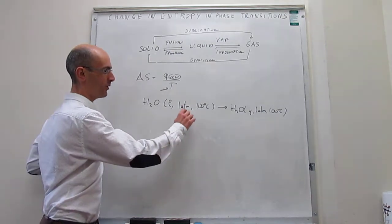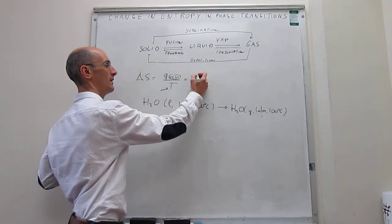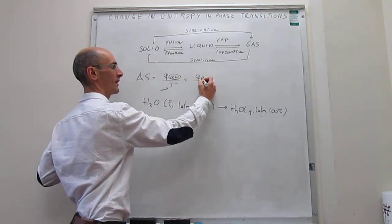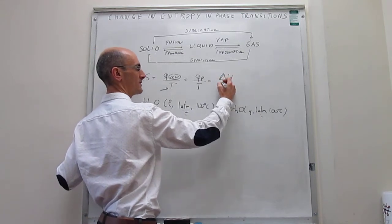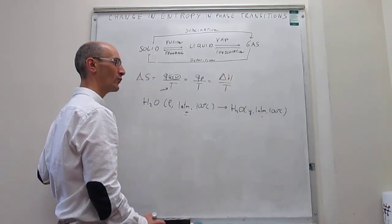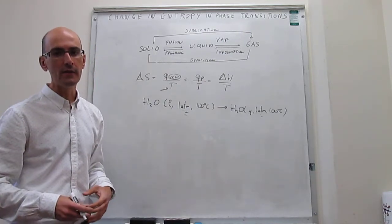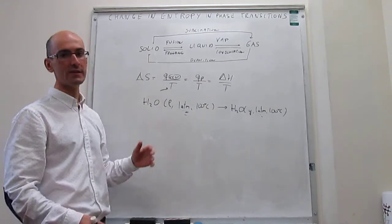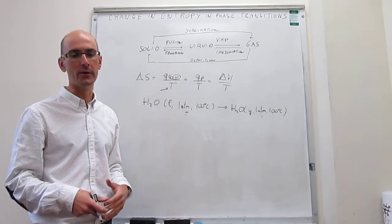Now, because we're operating at constant pressure, we know that this is going to be equal to Q sub P over T, but that is equal to delta H at constant pressure. So if we know the enthalpy of the phase transition, then we will be able to calculate a change in entropy right away. And it turns out that the enthalpies of common phase transitions are well known.